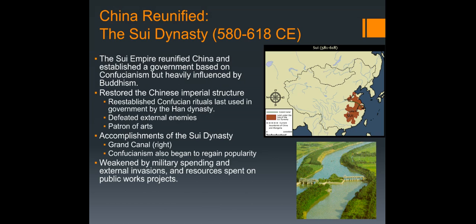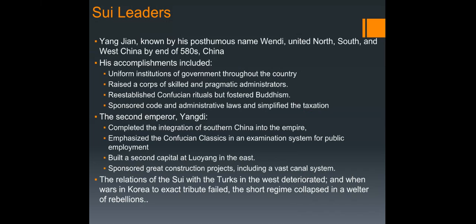Some leaders did quite a bit. Wendi united north, south, and west China by the end of 580 — he is the founder of the Sui. His accomplishments were numerous: he created uniform institutions of government throughout the country, raised a group of skilled administrators, and re-established Confucian rituals last used by the Han, saving Confucian ideals while simultaneously fostering Buddhism.